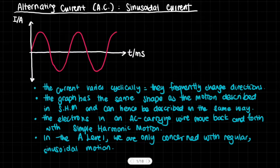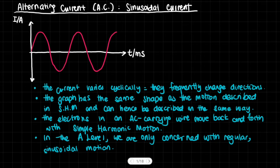Today we're going to talk about alternating current at the A-level. We'll cover the formula for alternating current, its sinusoidal form, the voltage of an alternating current, and the power of alternating currents using the root mean squared values of both the alternating current and the alternating voltage.